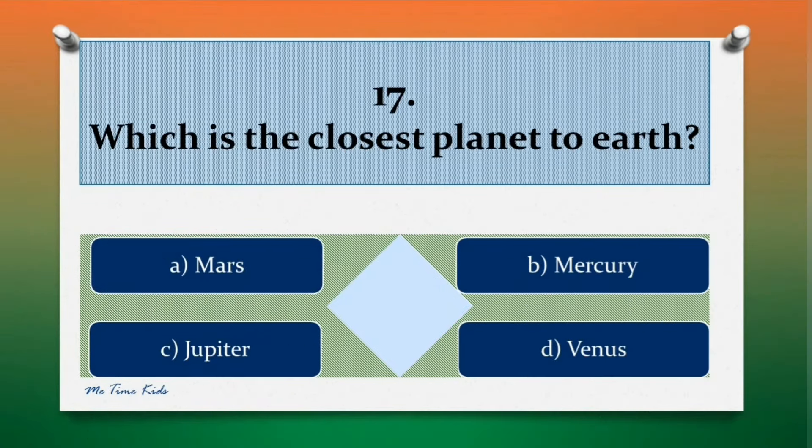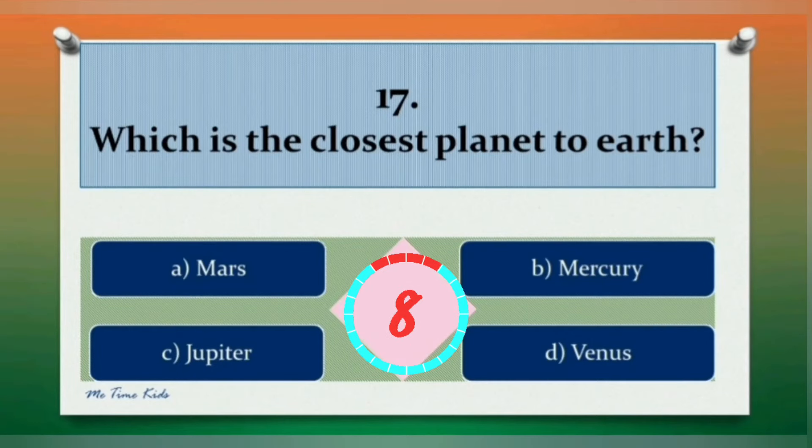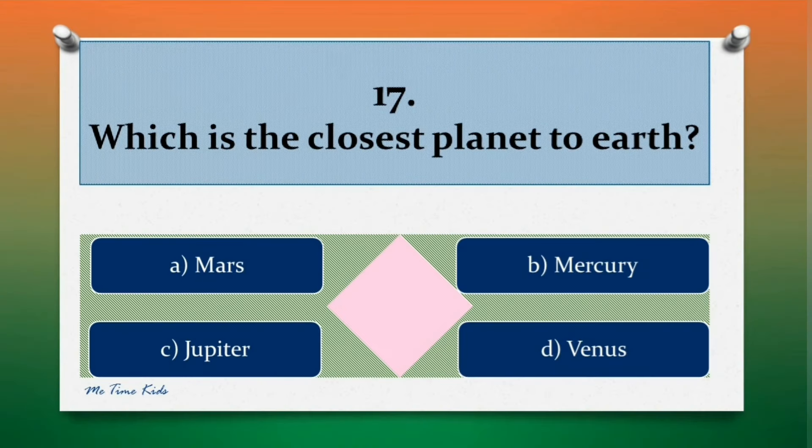Question 17. Which is the closest planet to earth? Options are: a. Mars, b. Mercury, c. Jupiter, d. Venus. Correct answer is d. Venus.